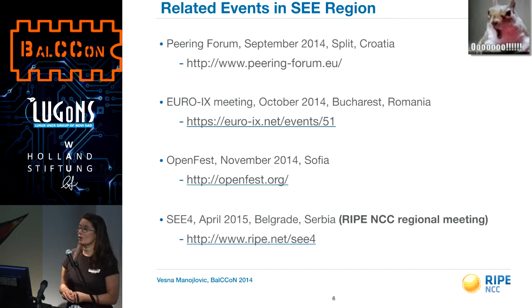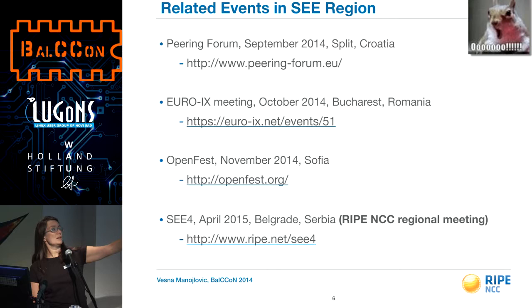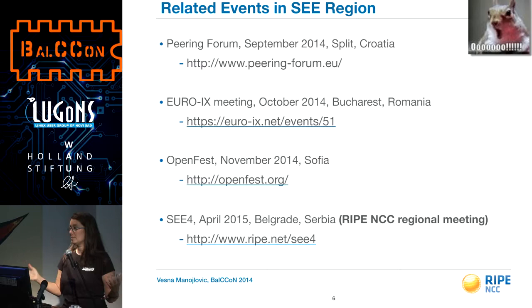We also travel around and go to all kinds of meetings like this. In this region, there are several conferences coming up. The most important one, organized by RIPE NCC, is next year in April in Belgrade — the Southeastern European meeting. We had to come up with that long acronym because we can't call it 'Balkans' — that's not politically correct. You're all welcome to come to that meeting; it's not only for RIPE NCC members, attendance is free, and there are lectures from the local community and the broader RIPE community.